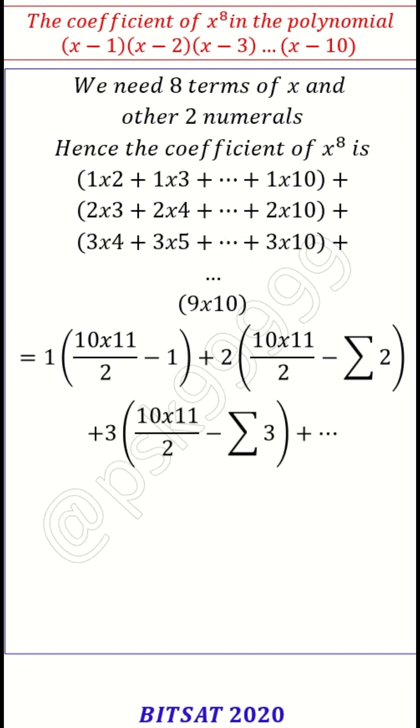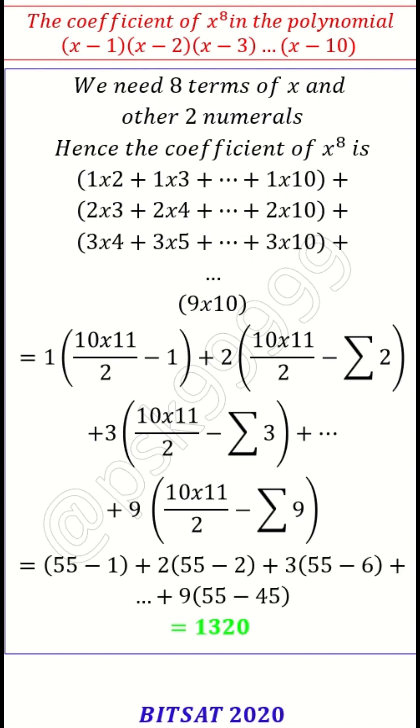Similarly for 3, if I take common it will be sum of 10 integers minus sigma 3. This is 1 plus 2 plus 3. Similarly, so we just simplified what the answer you will get is 1320. That's the answer.